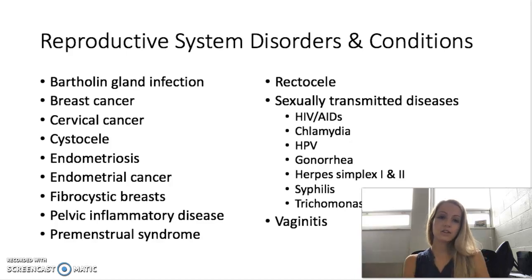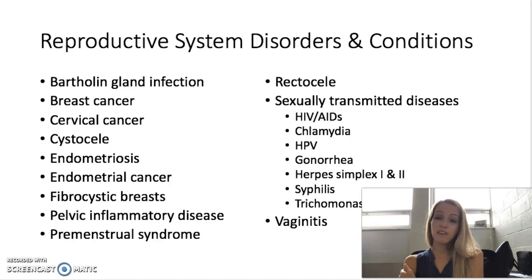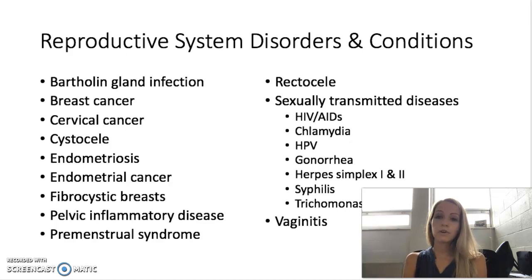Vaginitis is our last condition — that's inflammation of the vagina that can be caused by bacteria, fungus, different chemical irritants like changing soaps, irritation from foreign bodies, or even a vitamin deficiency or uncleanliness. So different things can cause that irritation and inflammation of the vagina. These are just some of the most common disorders and conditions for the female reproductive tract, so be sure to be familiar with these. Remember to stay tuned to learn more about STDs in the male reproductive system.